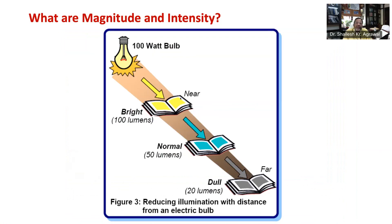Consider the analogy of an electric bulb. The intensity of light, that is illumination, at a location near a 100-watt bulb is higher and will reduce as we move further away from the source. While the bulb releases 100 watts of energy, the illumination at a location depends on the wattage and its distance from the bulb. The size of the bulb — 100 watts — is like the magnitude of the earthquake, and the illumination at different locations is like the intensity of shaking at those locations.